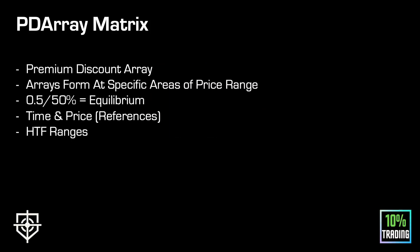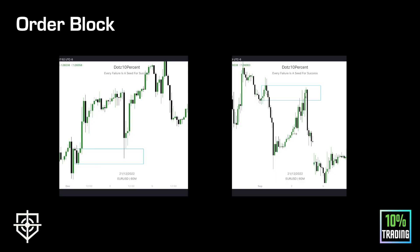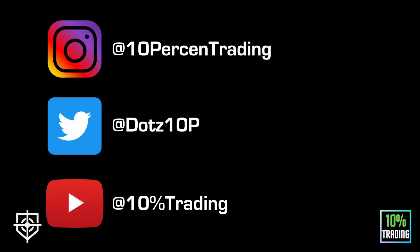That is it for the PD Array Matrix lesson. The name might seem complex but it's not a very complex topic. It can be a game changer if you do enough testing, get your eyes used to it, and understand the principle behind it — understand why the algorithm does this. The PD Array Matrix brings all of this together; it's essentially how the algorithm delivers price, the steps in its delivery when forming a range. You might have to go over this a few times and that's fine. Once it clicks it's worth it. Any questions, just give me a shout and I'll be back soon with another lesson.